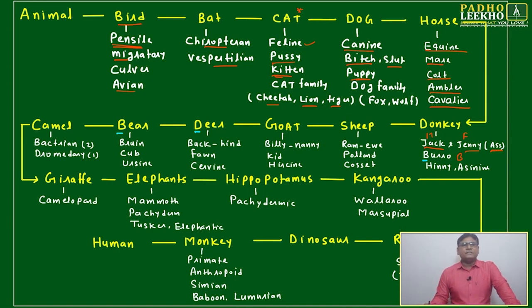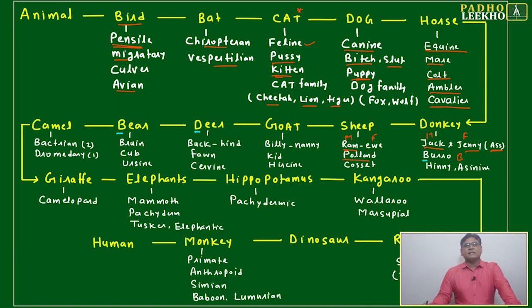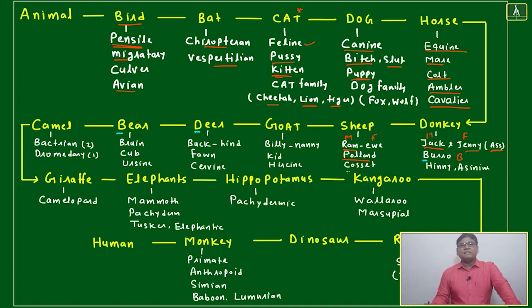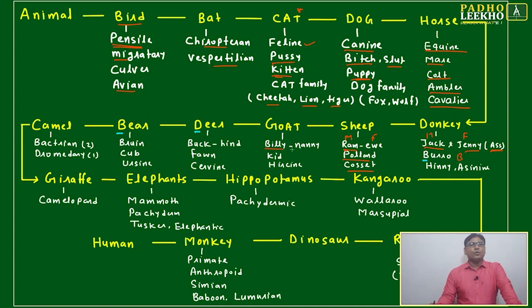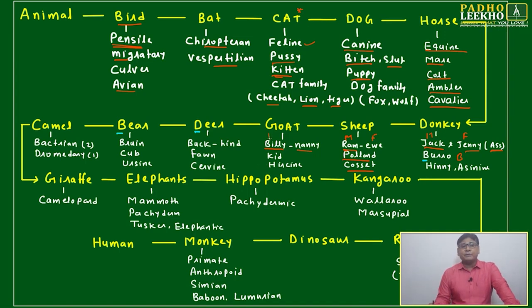Sheep — ram is male sheep, ewe is female sheep, and pollard is the baby sheep.